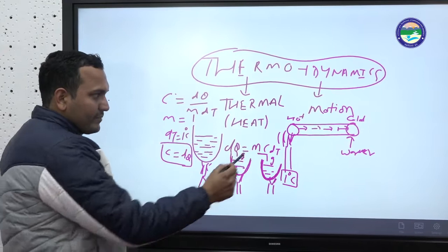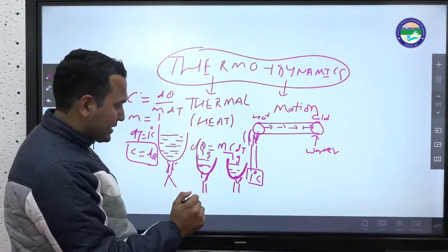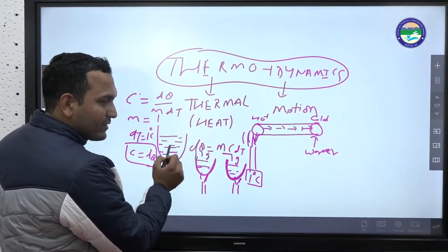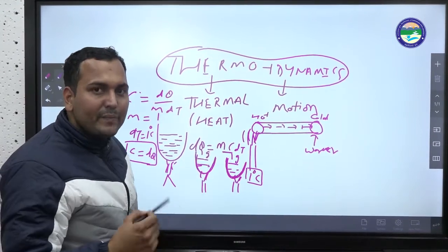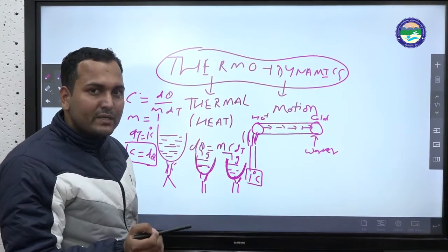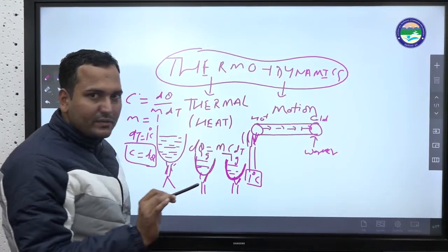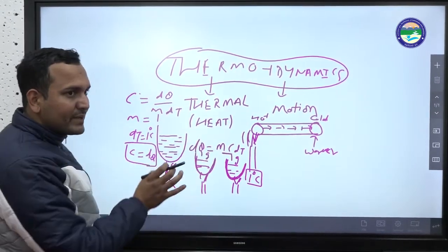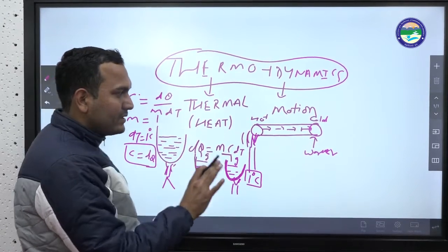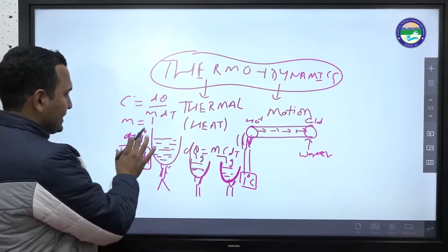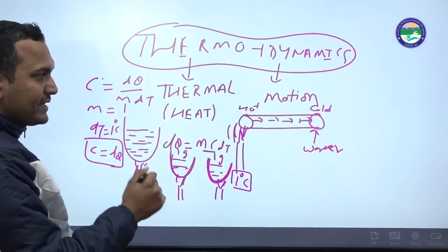As we talked about motion, here we also talk about heat and its flow. Heat can flow from one place to another, and this depends on the properties and parameters of the medium. All of these aspects are studied in thermodynamics.